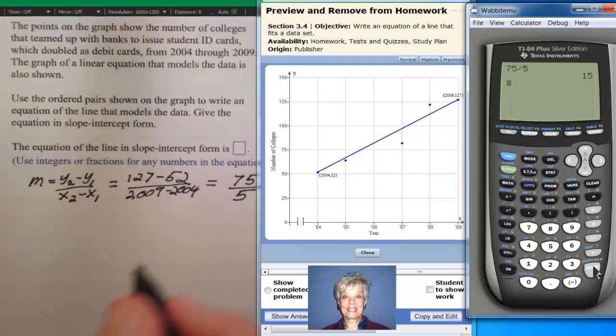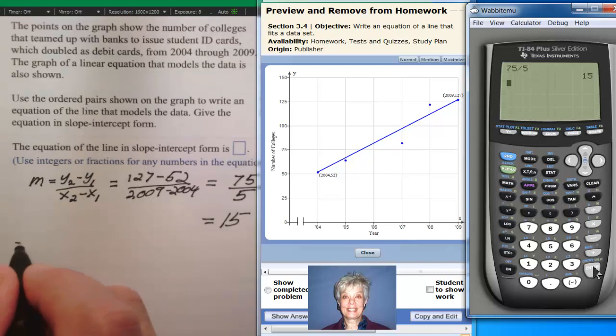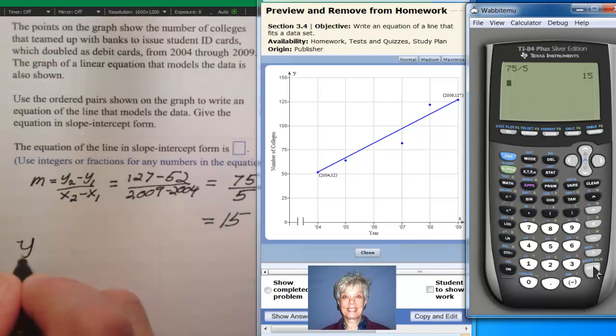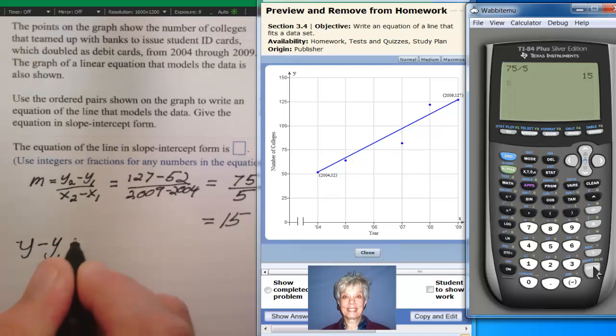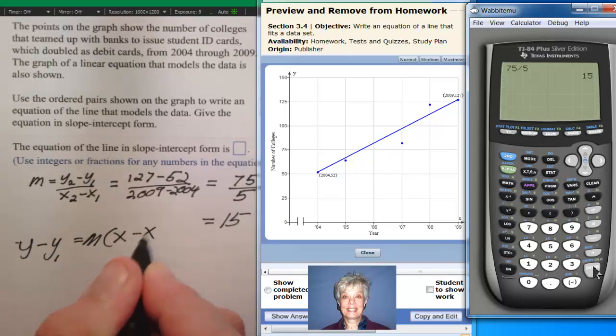So we know that our slope is 15. And I ran off the side of the page. Our slope is 15.